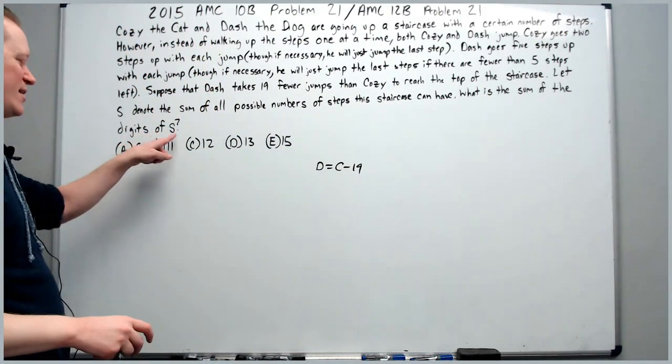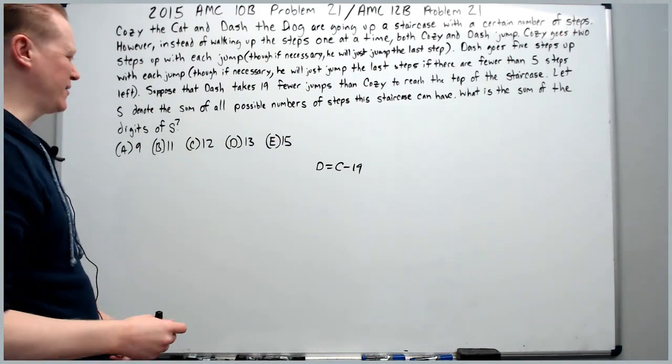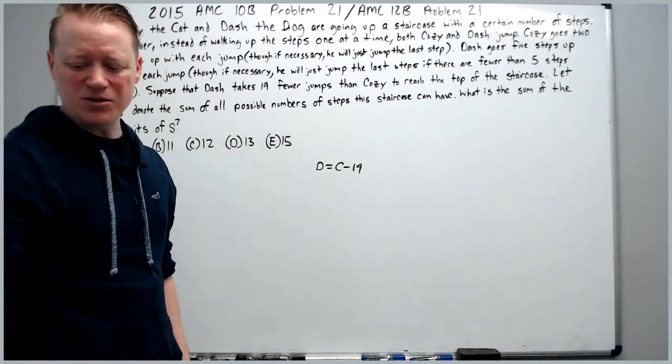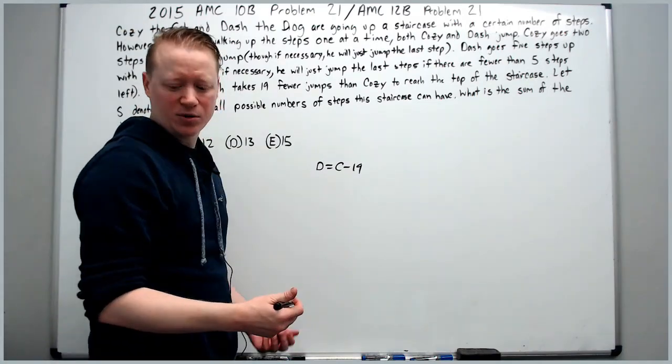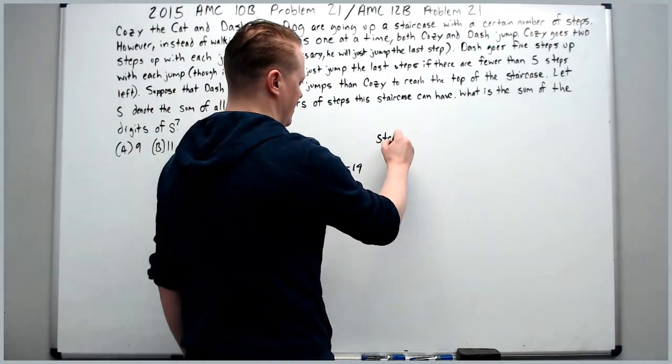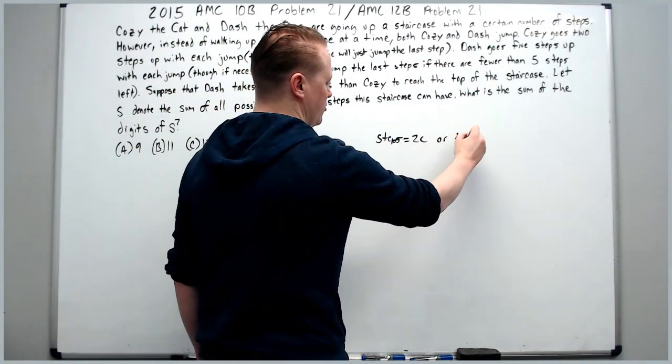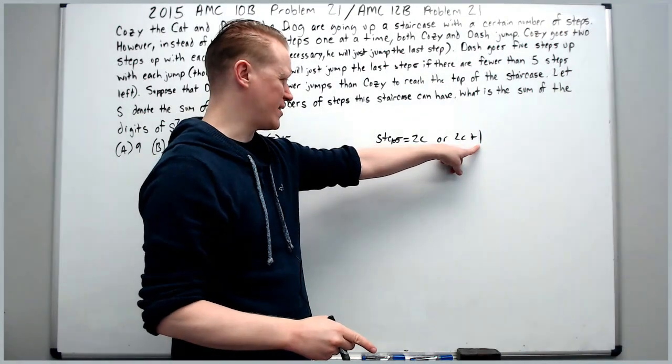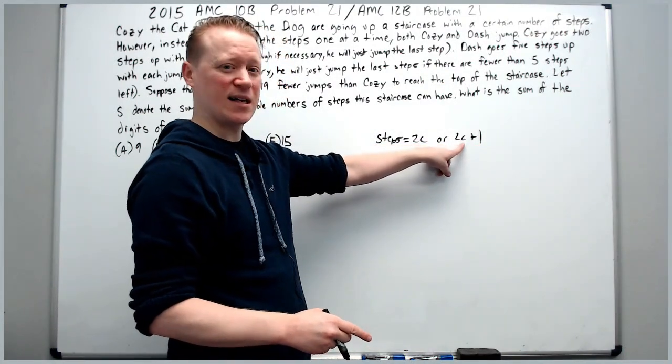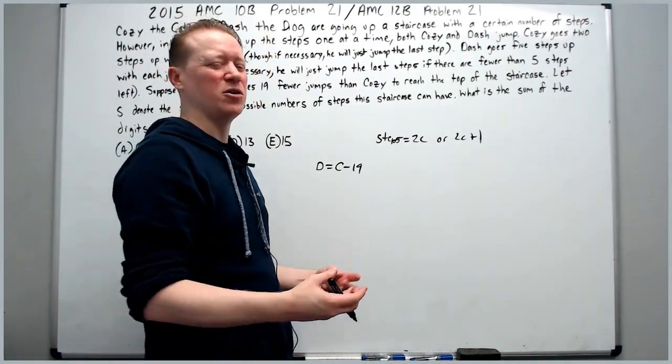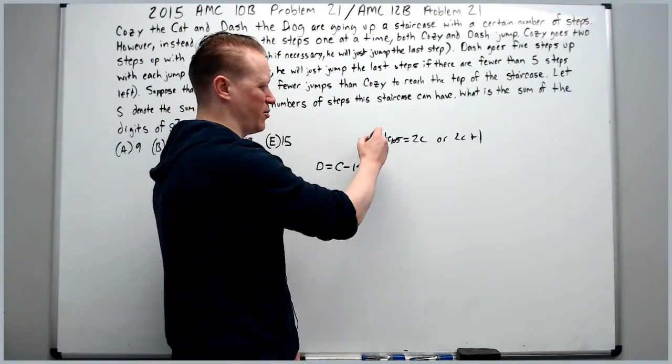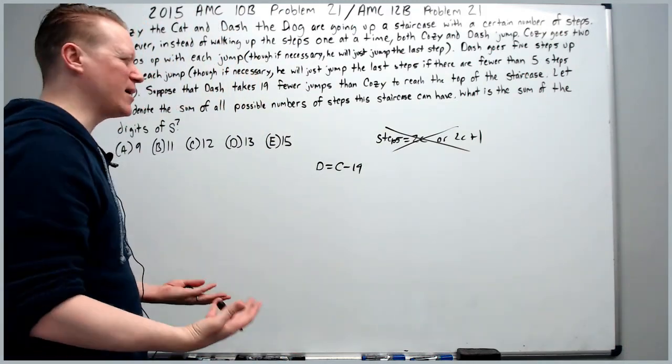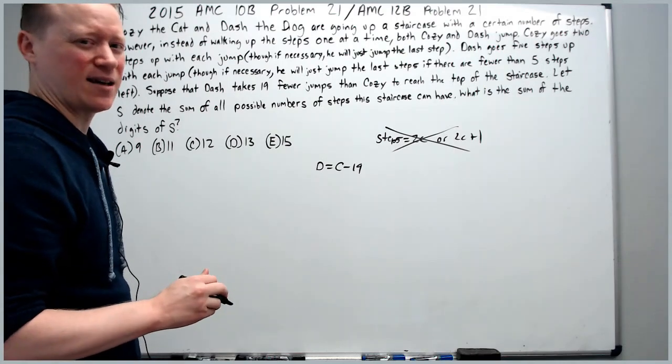What is the sum of the digits of S? So the first thing out the gate is you're not going to be able to use the answers to help you, so don't think about those. The next thing is if you try to make equations, like for example, you could try to say that the number of steps is equal to 2C or 2C plus 1. The problem is it's not accurate. Because if there was another step, Cozy wouldn't take C steps, he would take C plus 1 steps and it gets a little difficult to create nice algebraic equations that actually work.